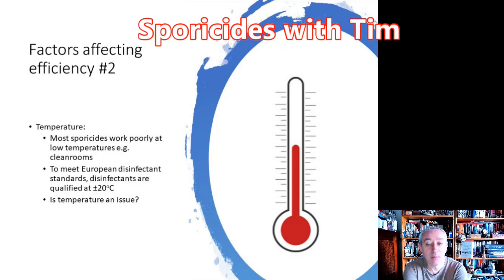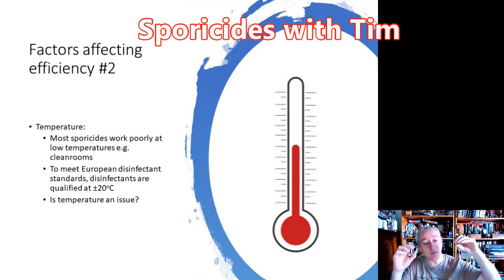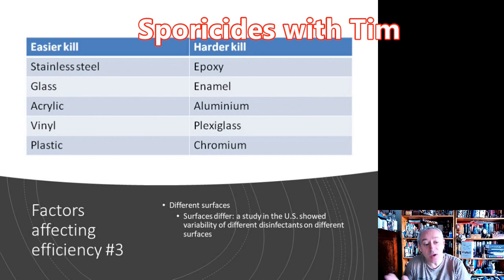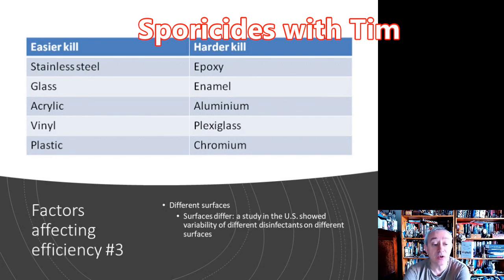Temperature is really important. If we're going to use sporicides in cold rooms, we need to increase the contact time because they're going to take longer to kill — there's a complex relationship between disinfectant contact time and ambient temperature. Different surfaces also matter; studies show that surfaces differ in how quickly they kill, so we need to find the optimal time. The contact time quoted is often one evaluated against a range of different surfaces, but stainless steel needs a little bit longer than glass, for example.